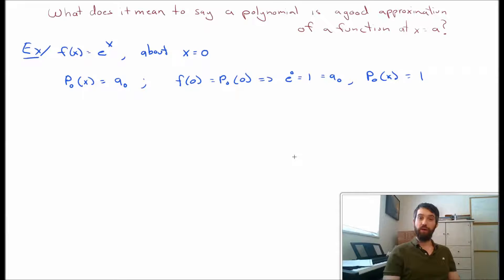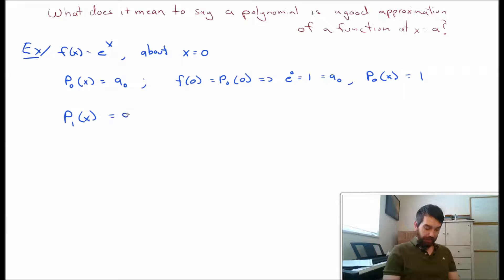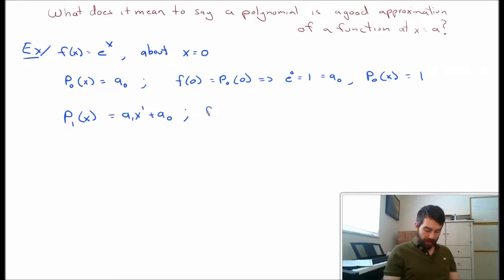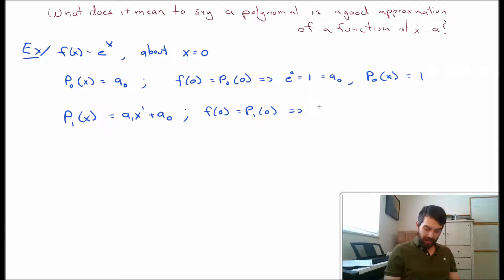Maybe I can do better by approximating with a polynomial of degree 1. I'll call this p1, which has a first-order term a1 times x to the power of 1, plus a constant a0. I can still demand that f of 0 equals p1 of 0, and plugging in x equal to 0 makes the x term vanish — so a0 is equal to 1 in exactly the same manner.